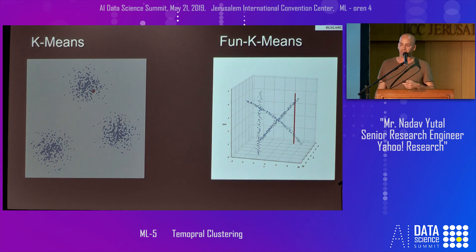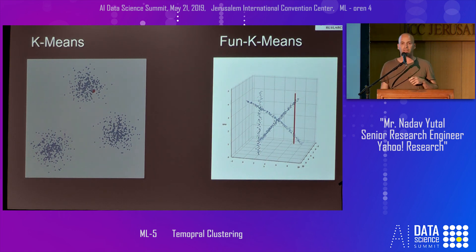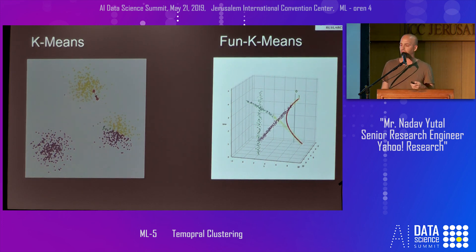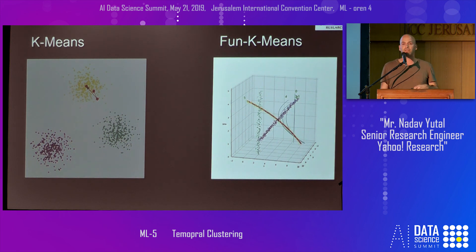In the first stage, we initialize the centroids — in this case as constant centroids, having the same value over all time. Then we assign each object to one of the clusters; here we assign all the yellow points to the centroid. In the update step, instead of averaging the data, we apply polyfit to all the yellow objects to find the best polynomial that describes this data. We repeat these two steps until convergence, and we can see that after five iterations we converge to the real synthetic source of the data — and it applies to the other two centroids as well.